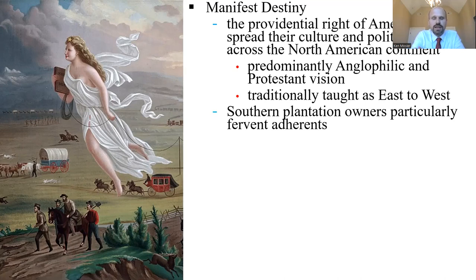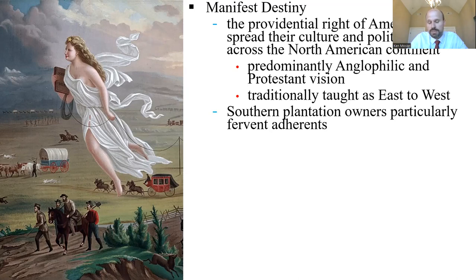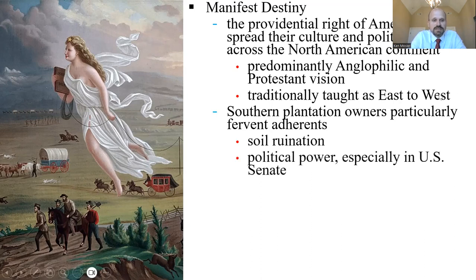With manifest destiny, the classic explanation is the providential spread of American culture and politics across the North American continent — very Anglo-philic and Protestant in vision, taught as an inevitable east-to-west spread. We'll look at this classic political cartoon depicting the concept. What often is not taught is the role that southern plantation owners had in manifest destiny — they were some of its most fervent adherents.